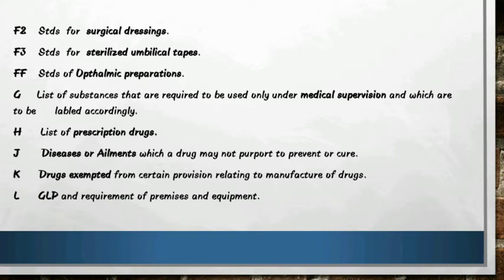Schedule G to the rules is the list of substances that are required to be used only under medical supervision and which are to be labeled accordingly. The trick to remember is G sounds like 'gh' — medical supervision. Schedule H to the rules is the list of prescription drugs — this is most important.